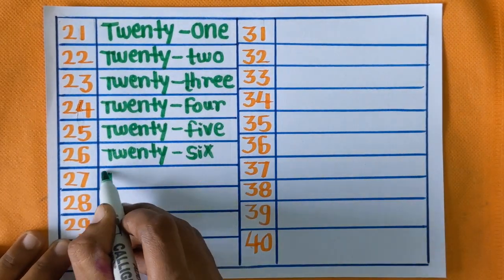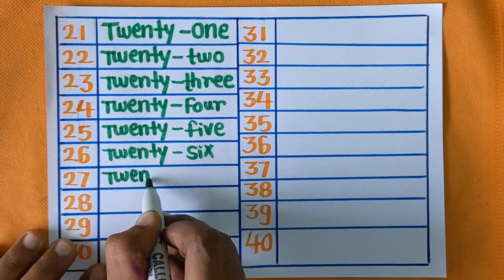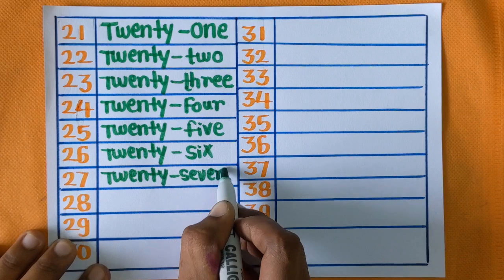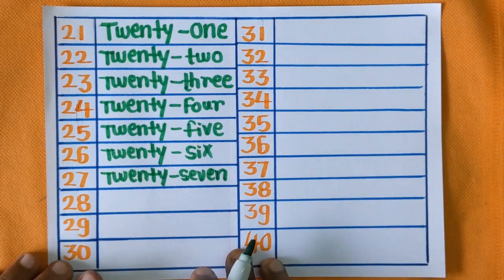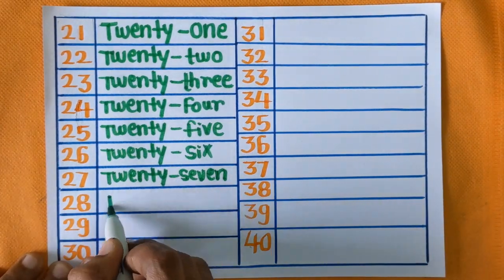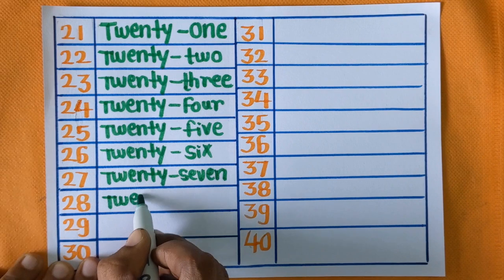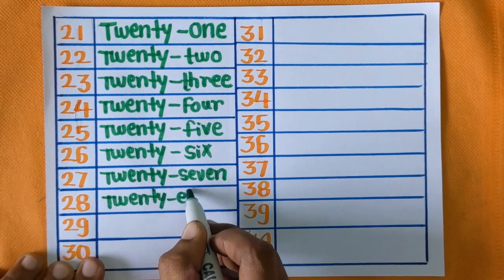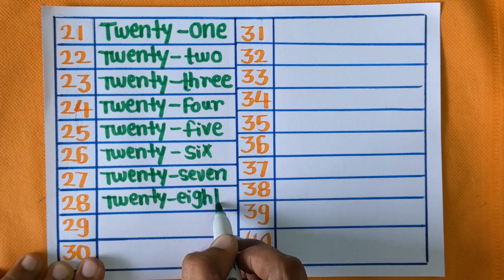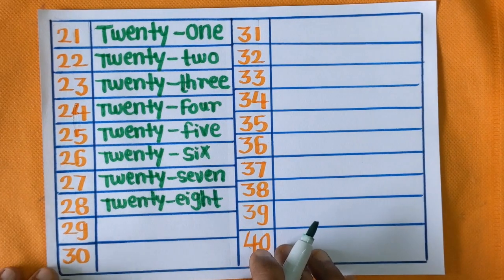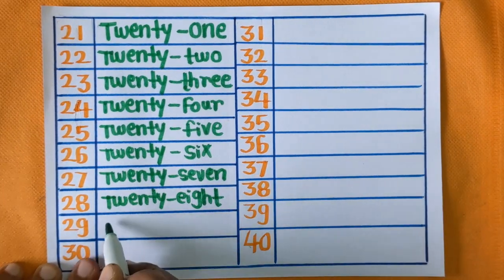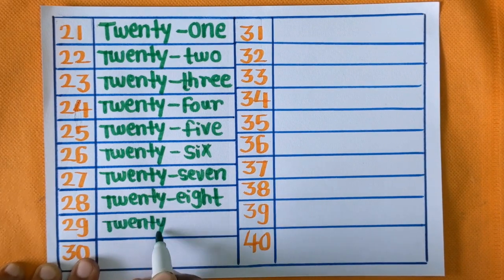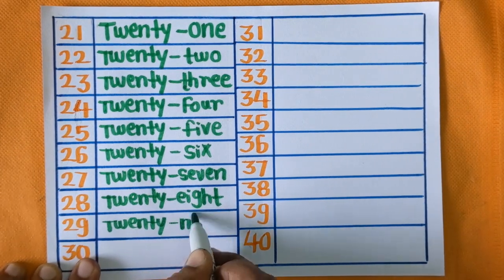Next is number twenty-seven: T-W-E-N-T-Y, S-E-V-E-N, twenty-seven. Next is number twenty-eight: T-W-E-N-T-Y, E-I-G-H-T, twenty-eight.